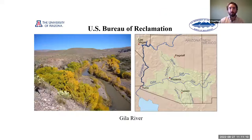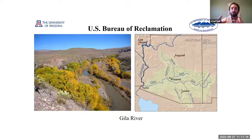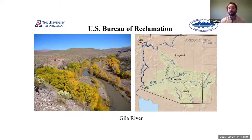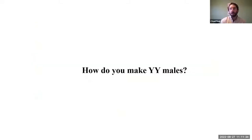My funding for this project comes from the US Bureau of Reclamation, and our goal is to work on invasive population management in the Gila River Basin. We wanted to take this theoretical approach and apply it to the species that are impacting the Gila River Basin. But with Red Shiner — how do you actually make these YY males?